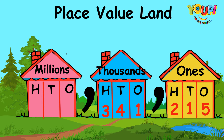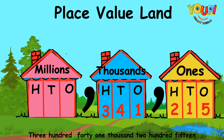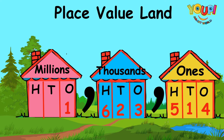Since there is no comma or gate after the Ones house, there is no need to say their last name. For example, you would say 341,215 — "three hundred forty-one thousand, two hundred fifteen." Remember, there is no comma after the Ones family, so we don't say their last name. In this case we have the Thousands house first, and then the Ones.